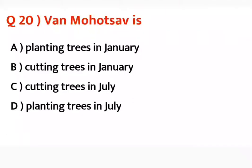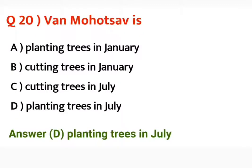Question number twenty: Van Mahotsav is planting trees in January, cutting trees in January, cutting trees in July, or planting trees in July? Correct answer is D — planting trees in July.